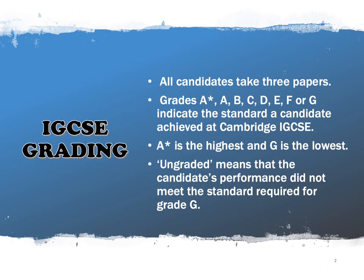For IGCSE gradings, the candidate can opt for core paper or extended. However, all the candidates have to take 3 papers. Grade A star, A, B, C, D, E, F, or G indicate the standard a candidate achieved at Cambridge IGCSE, whereby A star will be the highest and G will be the lowest. U stands for ungraded, meaning the candidate's performance did not meet the standard requirement for grade G.